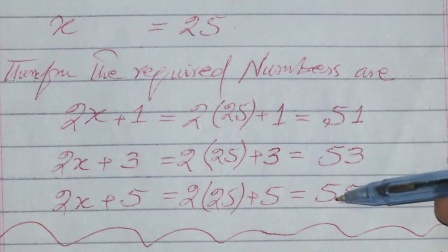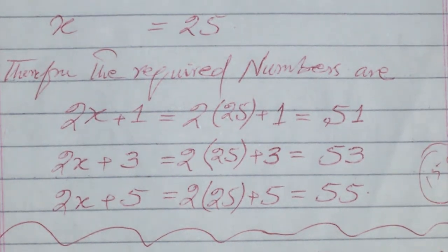So the three consecutive odd integers whose sum is 159 are 51, 53, and 55. The condition is satisfied.